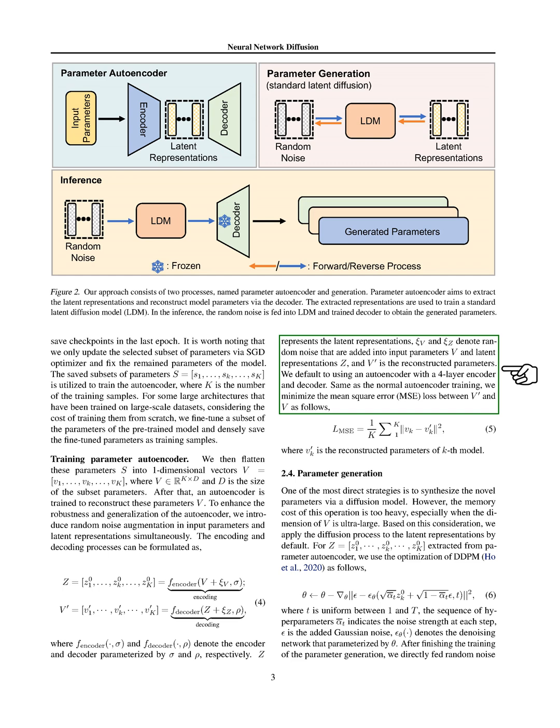Section: Parameter Generation. In this section, we discuss the method of generating new parameters for neural networks. One straightforward approach is to use a diffusion model to create these new parameters. However, this method requires a lot of memory, which becomes a problem when dealing with very large sets of parameters. To address this, we focus on applying the diffusion process to the latent representations instead.